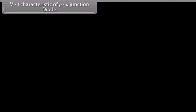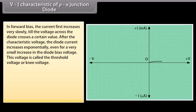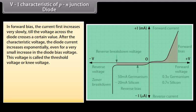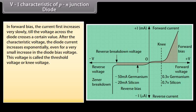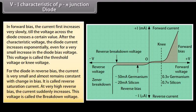V-I characteristics of a P-N junction diode. In forward bias, the current first increases very slowly until the voltage across the diode crosses a certain value. After the characteristic voltage, the diode current increases exponentially, even for a very small increase in the diode bias voltage. This voltage is called the threshold voltage or knee voltage. For the diode in reverse bias, the current is very small and almost remains constant with change in bias — this is called the reverse saturation current. At very high reverse bias, the current suddenly increases; this voltage is called the breakdown voltage.